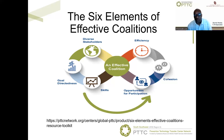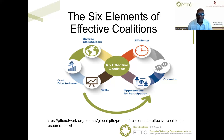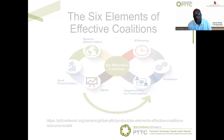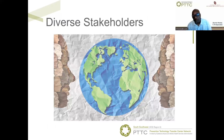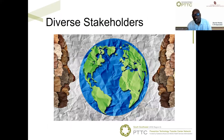During this brief video, we will focus on the importance of having diverse stakeholders and how to implement a plan to succeed in this effort. The resource toolkit is divided into sections covering each of the six elements of effective coalitions. We want to share knowledge about the impact of community-led prevention efforts to help you jumpstart your strategy to support local-led prevention efforts.